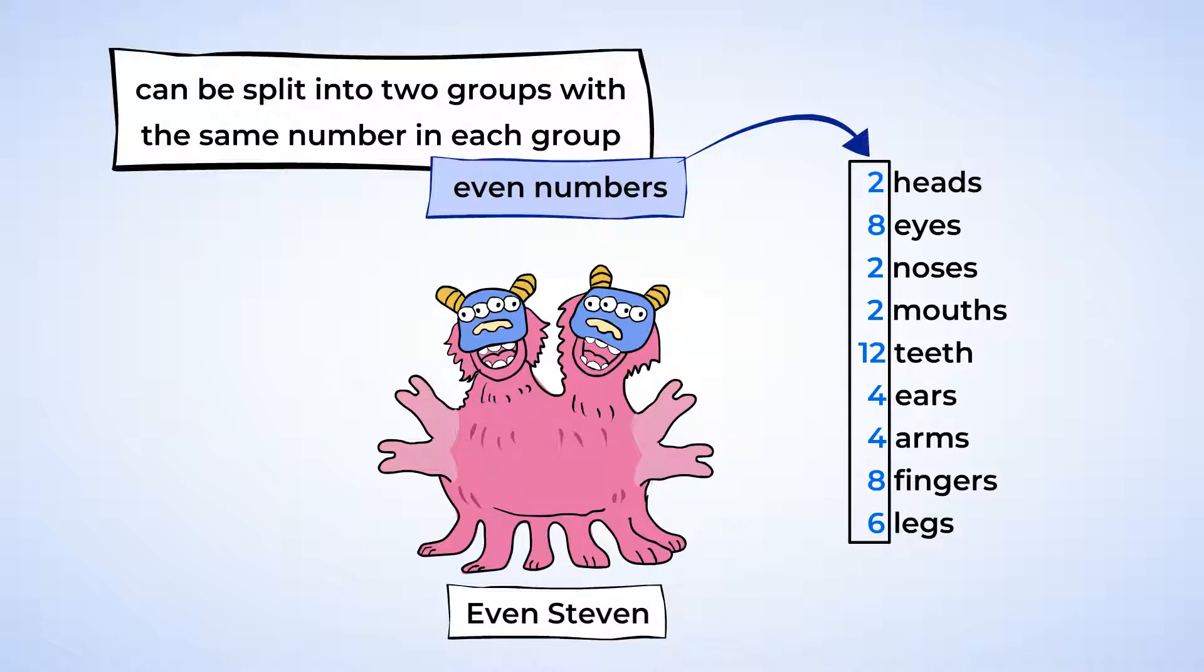An even number can be split into two groups with the same number in each group. You'll know if the number is even if the two groups match. We'll explore this a little bit more in a little bit, but first,